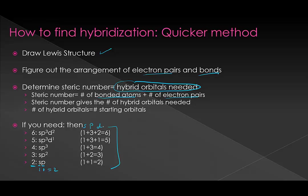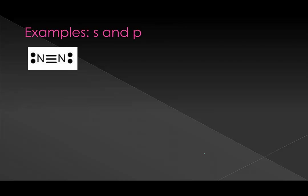After some practice, it's probably worthwhile to watch this video again to get the beginning part again. This is how we actually go about figuring out hybridization. As a first example — a trick one — if something is only bonded to one atom, there's no reason to hybridize it. For something like N2, each nitrogen is only bonded to one thing, so it's not going to be hybridized. That's a perfectly fine answer.